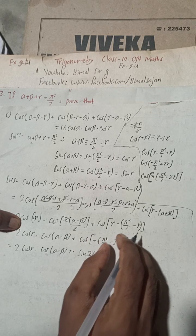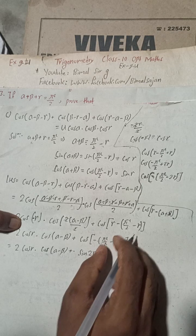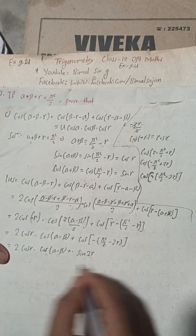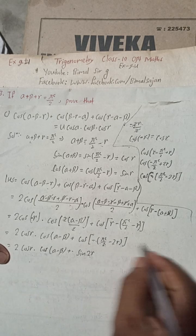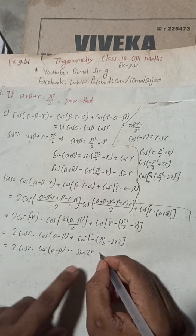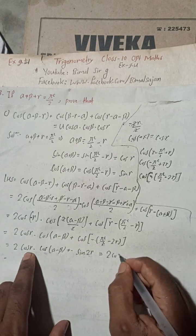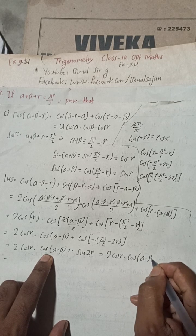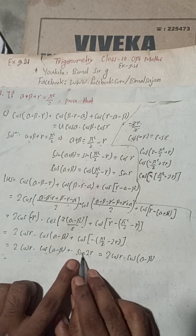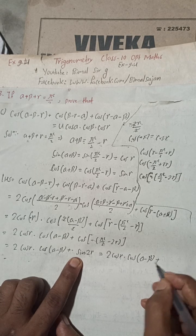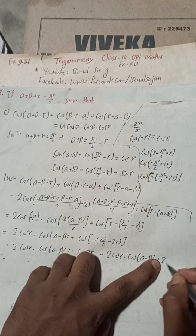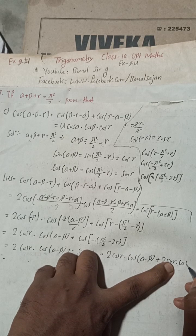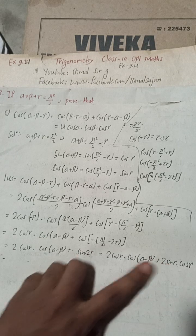Now we have 2 cos gamma times cos(alpha minus beta), plus cos(pi/2 minus 2 gamma). We apply the same identity to get sin(2 gamma). Then sin(2 gamma) can be split as 2 sin gamma cos gamma.